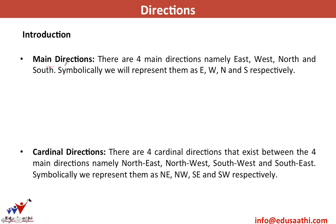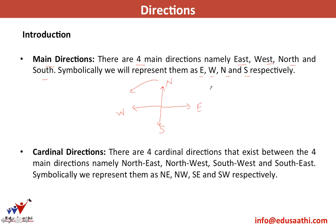The four main directions are East, West, North, and South, symbolically represented as E, W, N, and S. If you are sitting with a paper and draw an arrow facing away from you, that is the North direction. Towards the left of North is West, diagonally opposite to North is South, and towards the right is East.